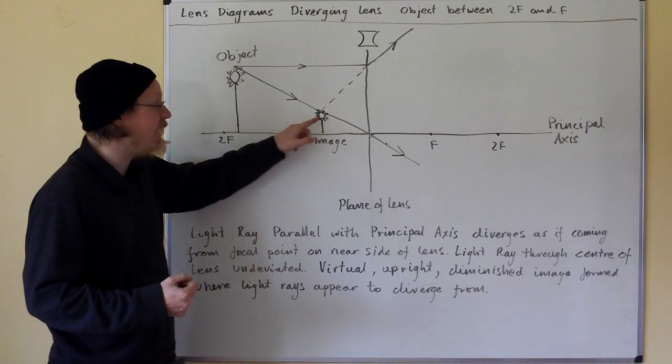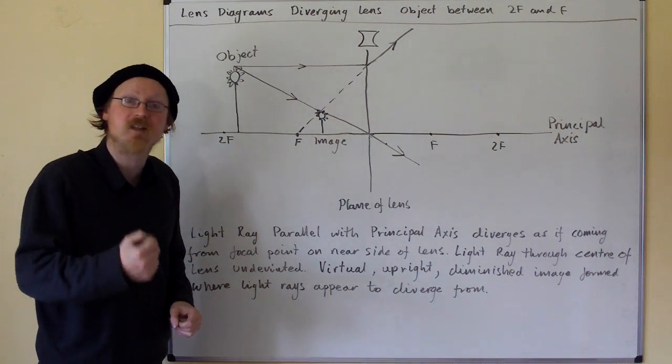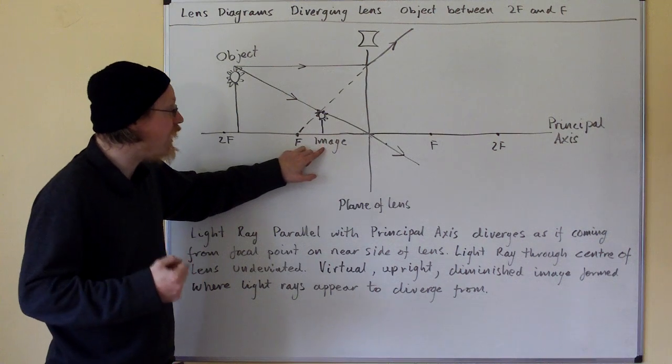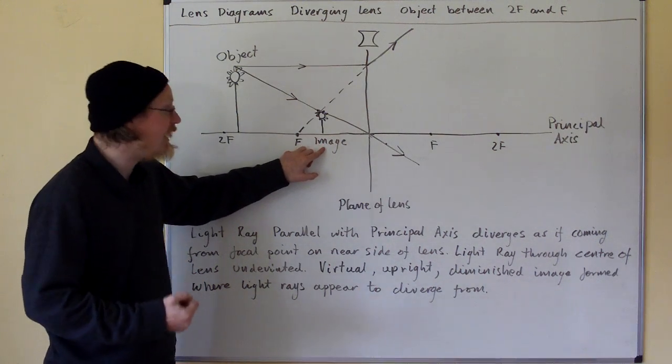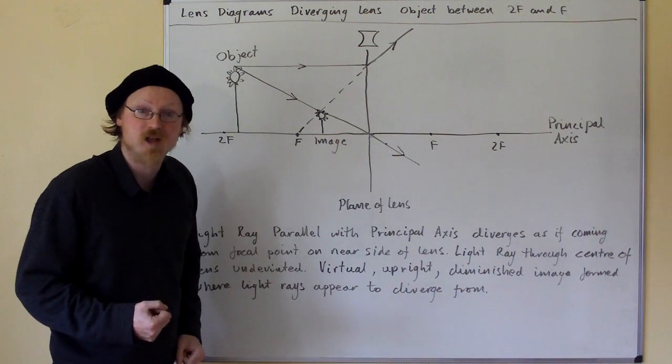Now, this forms an image, a virtual image, because it's only partially composed of real light rays. Some of the light rays are imaginary, so it's a virtual image. This forms a virtual, upright, diminished image where these two light rays appear to diverge from.